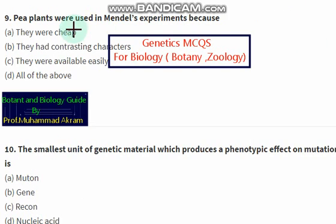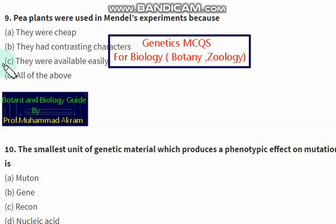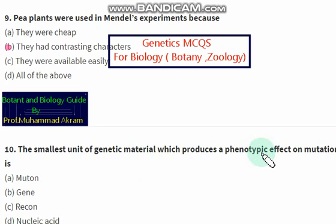Pea plants were used in Mendel's experiment because they were cheap, they had contrasting characteristics, or they were easily available. Option B is the right one — they had contrasting characteristics. The smallest unit of genetic material which produces a phenotypic effect on mutation is called a muton. This is the right option.